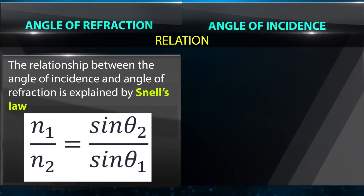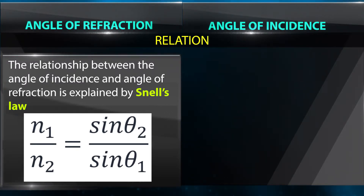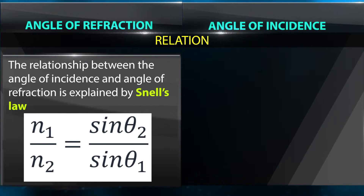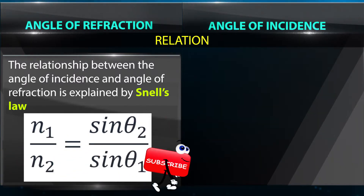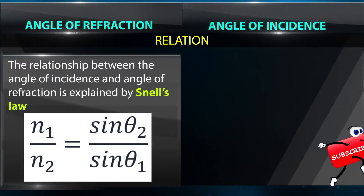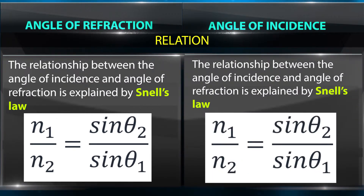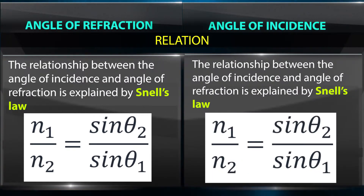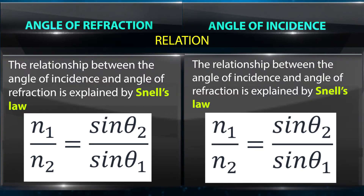Snell's Law states that n1 divided by n2 is equal to sine theta 2 divided by sine theta 1.